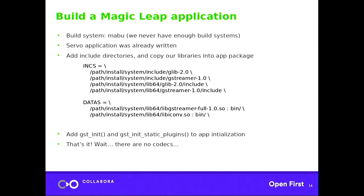Now that we have a small GStreamer build as a single library, the next step is to build it into a Magic Leap application package using their Mabu build system. You define include paths pointing to where gst-build installed GStreamer, GLib, etc. The data section lists files to copy into the application package — only two files: the libgstreamer-full shared library and the iconv shared library, since Magic Leap doesn't ship iconv.